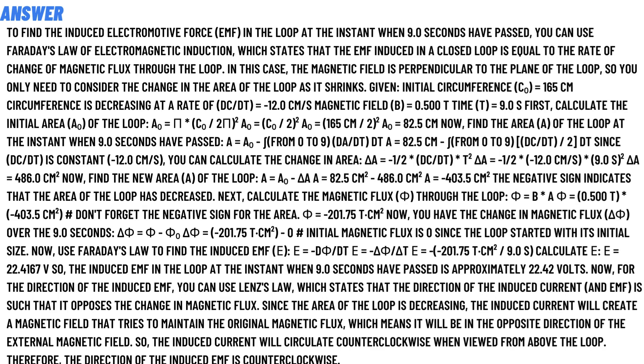the induced EMF, you can use Lenz's law, which states that the direction of the induced current and EMF is such that it opposes the change in magnetic flux. Since the area of the loop is decreasing, the induced current will create a magnetic field that tries to maintain the original magnetic flux, which means it will be in the opposite direction of